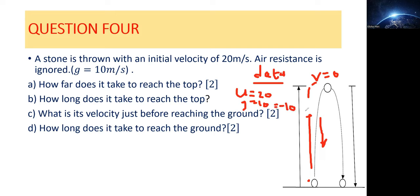In a case where an object is dropped from above and released, the pull of gravity is positive because that particle will be moving in the direction of the pull of gravity. Those are things you have to put into consideration. So we have the pull of gravity, initial velocity, and final velocity. When they say 'how far,' they're asking you to determine the height — the distance covered moving upwards from the starting point.